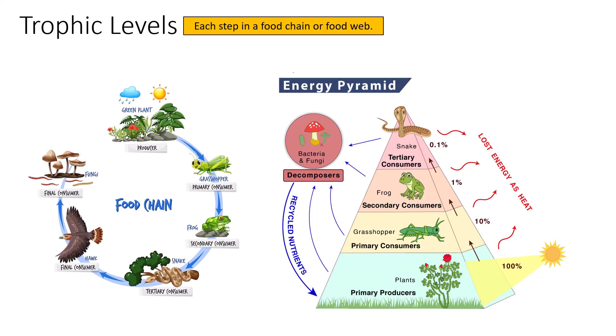When the primary producers are consumed by the primary consumers — in this case the grasshopper — 100% of that energy is not transferred as usable energy. Roughly 55% of the energy the grasshopper consumes is lost as heat, completely unusable. That leaves roughly 45% of every amount of food consumed that is usable to some extent by the grasshopper.